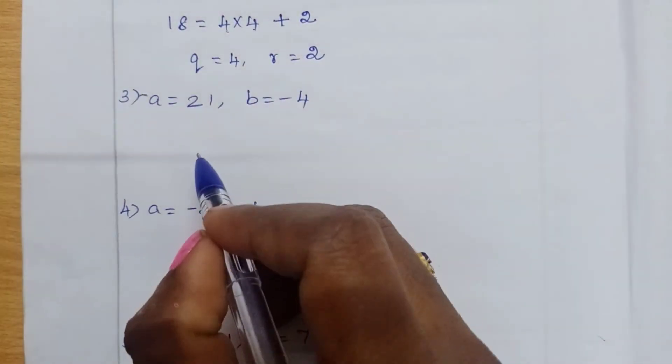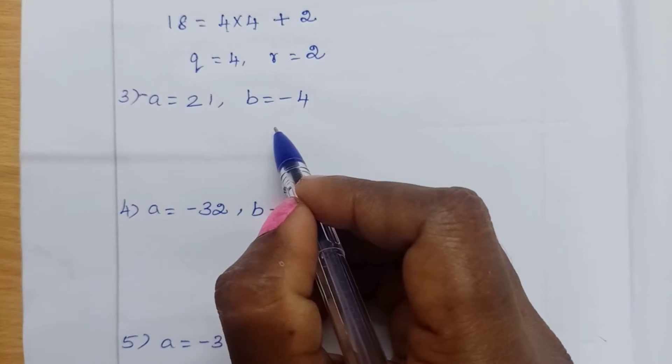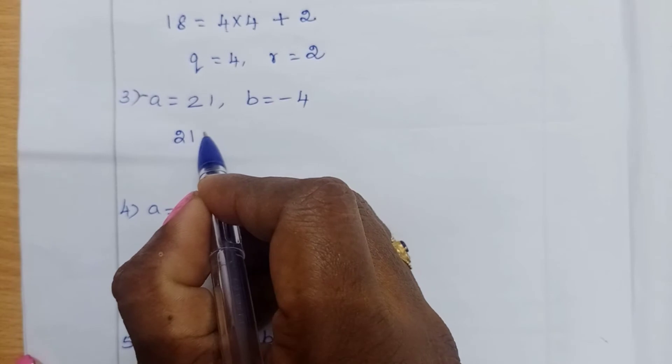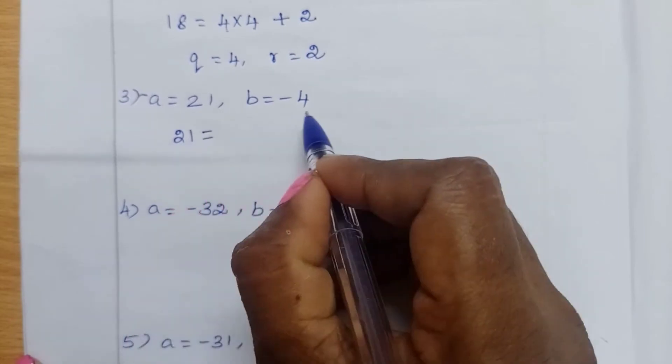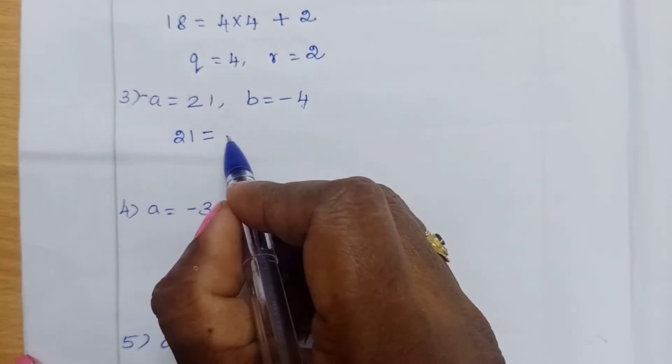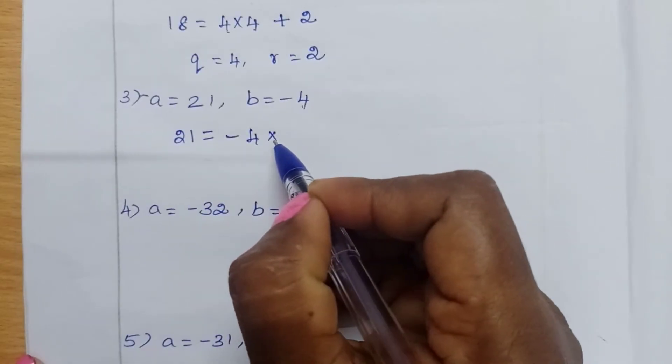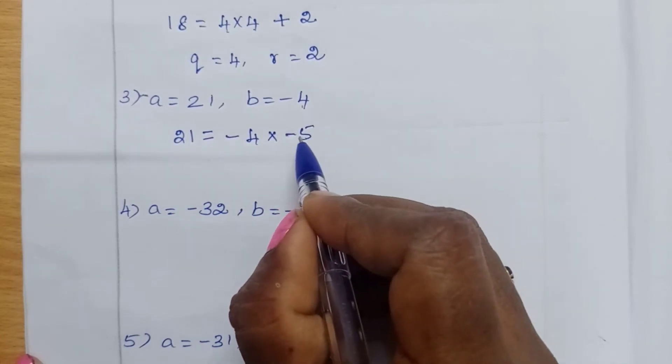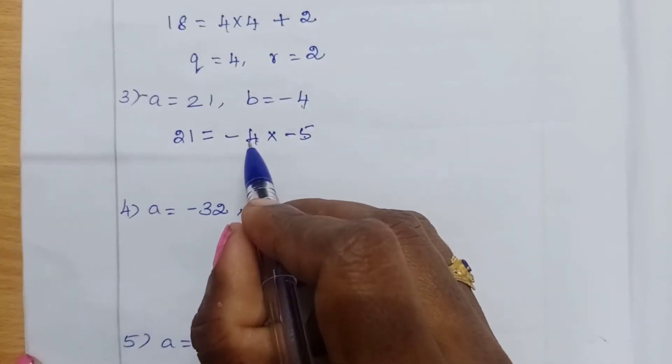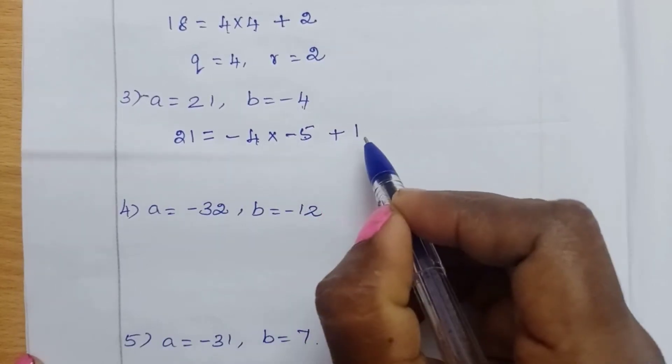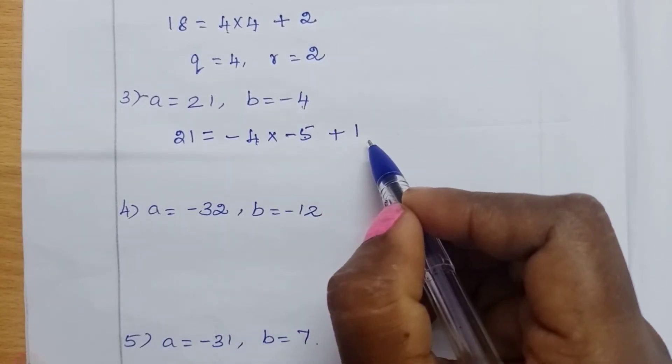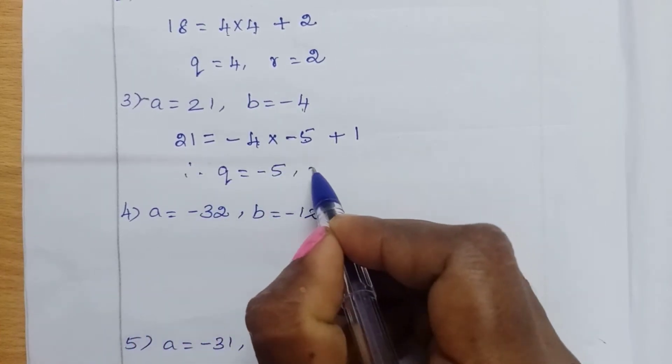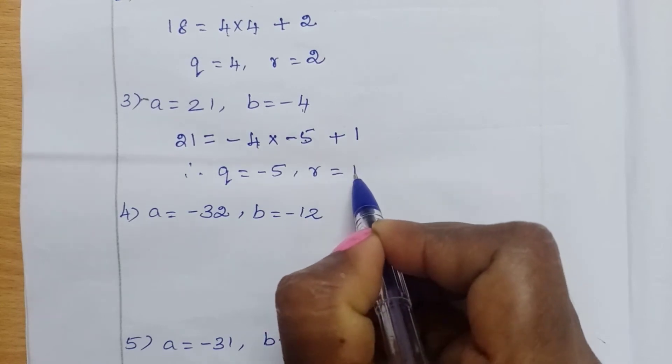A equal to 21, B equal to minus 4. So 21 equal to, here this divisor is minus 4. So minus 4 into minus 5. Minus 4 into minus 5 become 20. So reminder is plus 1, reminder is equal to 1. So therefore Q equal to minus 5 and R equal to 1.